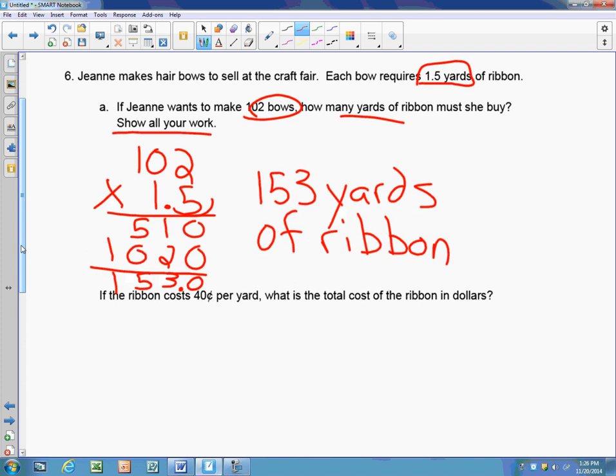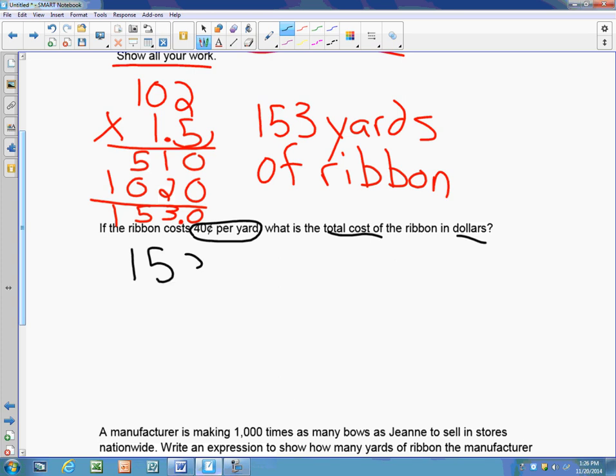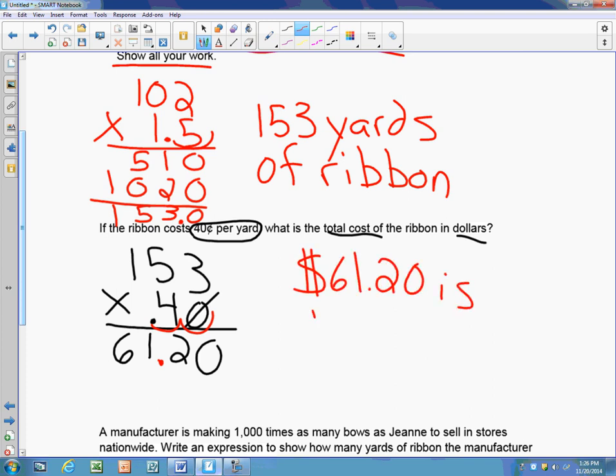And then we go on to the next part of the question. These two questions go together. And it says, if the ribbon costs $0.40 per yard, what's the total cost in dollars? So I have 153 yards and I want to multiply it by $0.40. When I'm talking about money, this is how I write $0.40. $0.40 has a decimal in front of it. Now I'm going to use my zero rule and ignore my zero for a minute. I'm going to multiply and then put my zero back in. And now I have two jumps. And I have figured that out now. It's $61.20. So I'm going to write $61.20 is the cost of the ribbon.